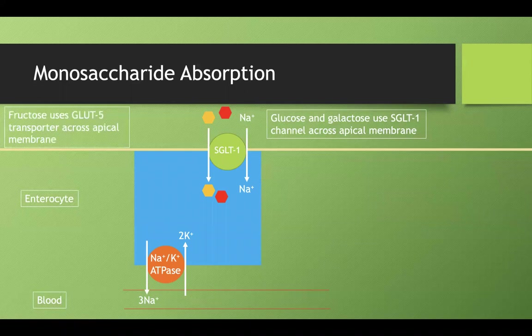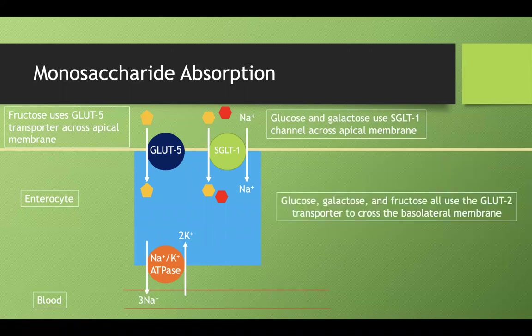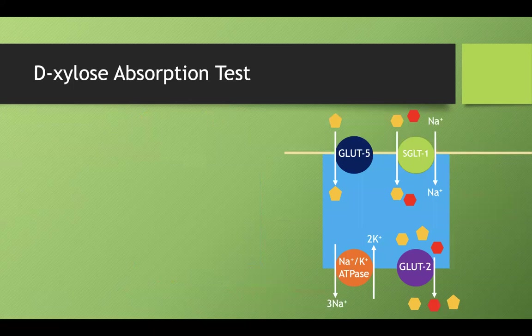Fructose follows a different pathway. Remember fructose has five carbons — use GLUT5 to bring fructose into the enterocyte. Once inside the cell, it doesn't matter whether it's fructose, glucose, or galactose — all three enter the bloodstream through the same GLUT2 transporter.